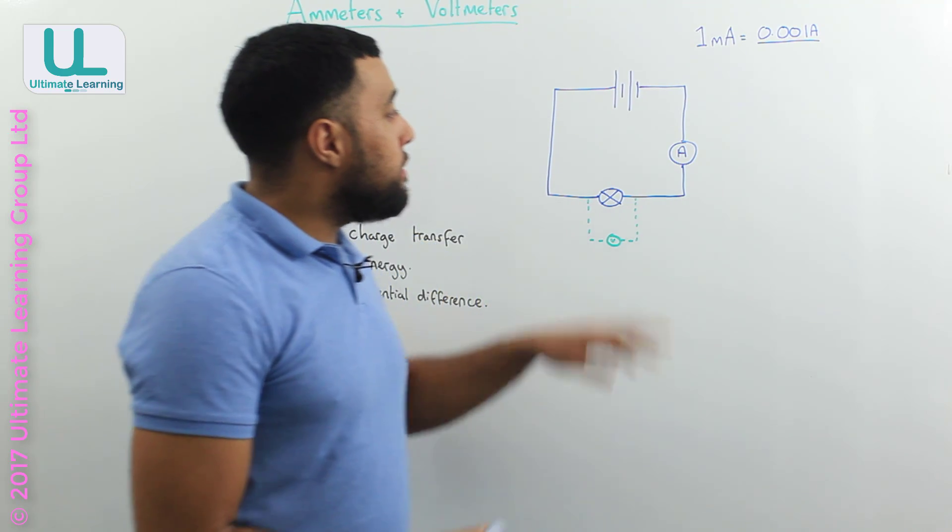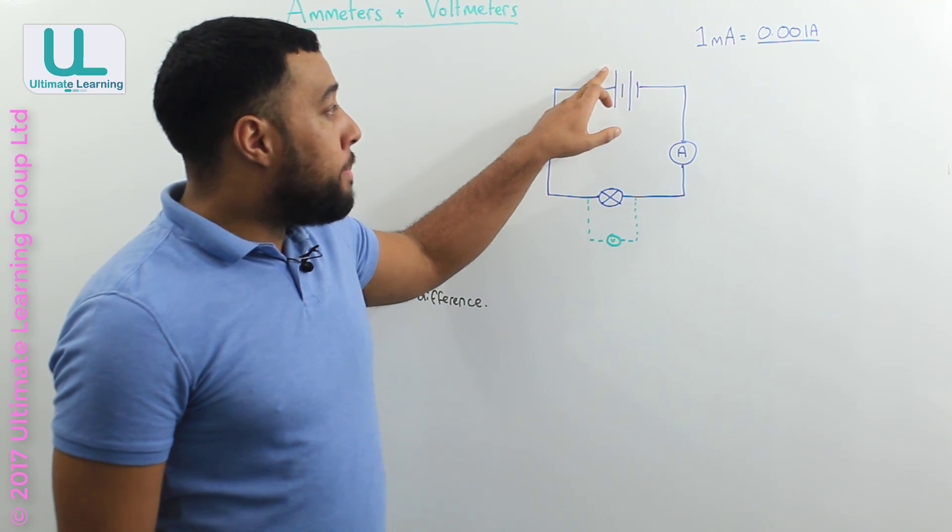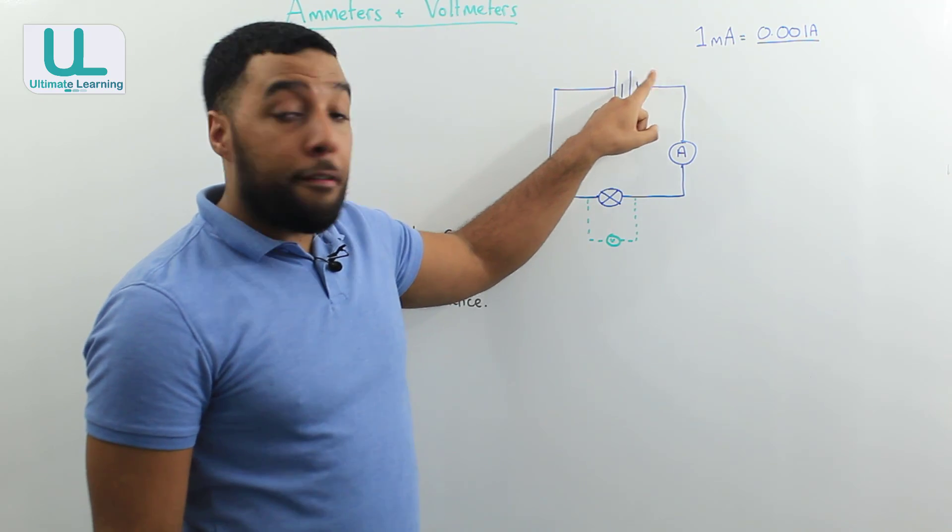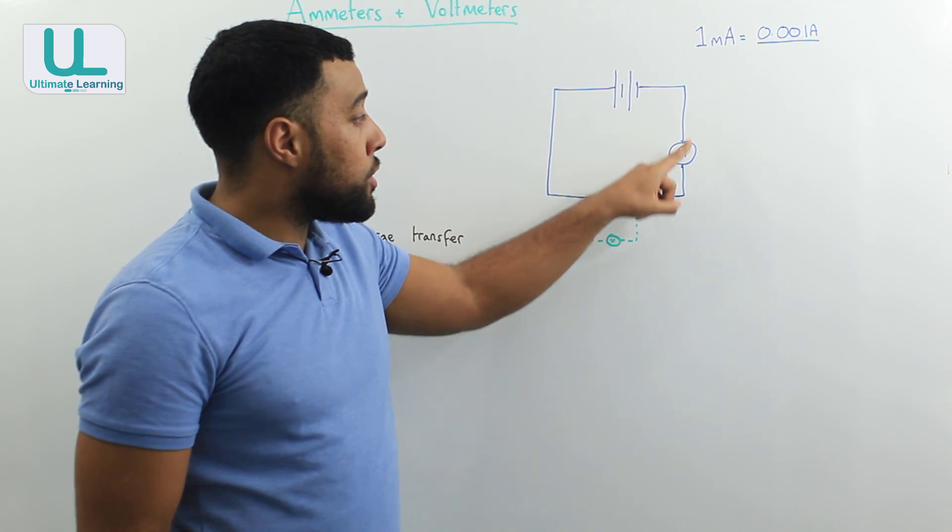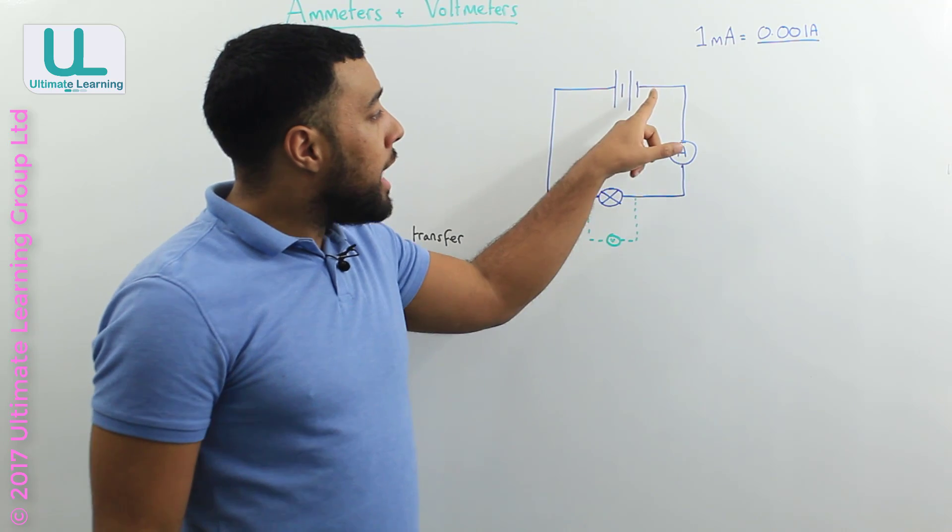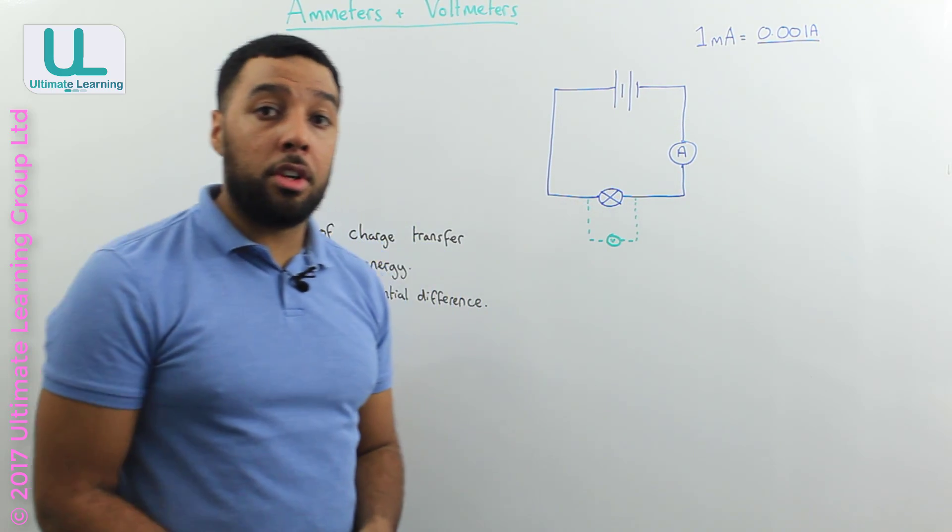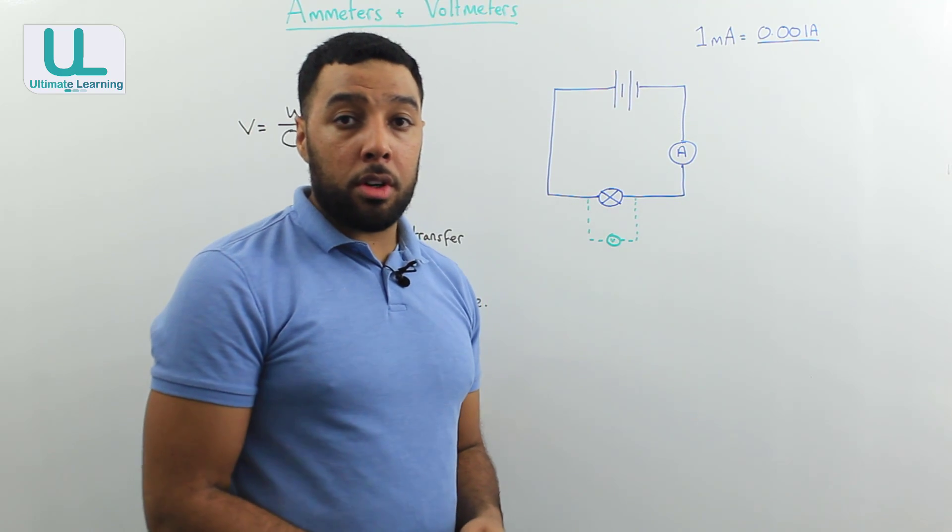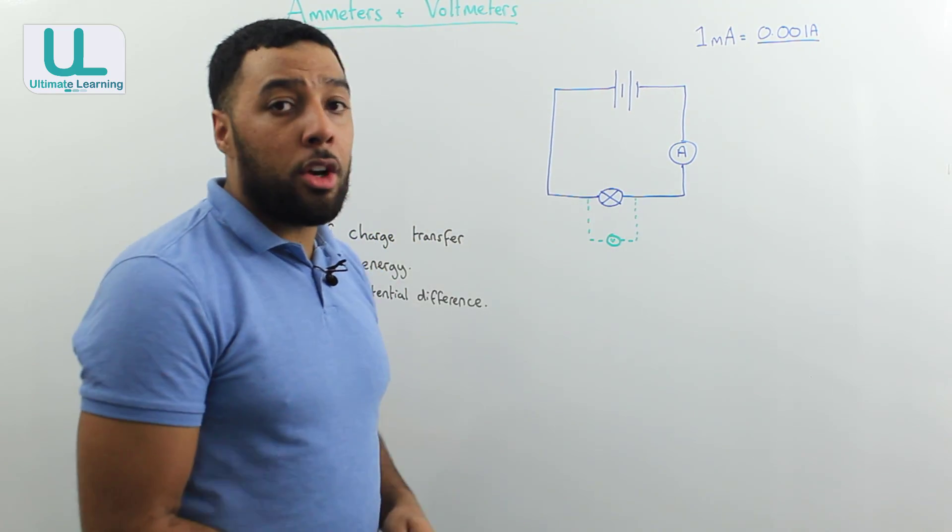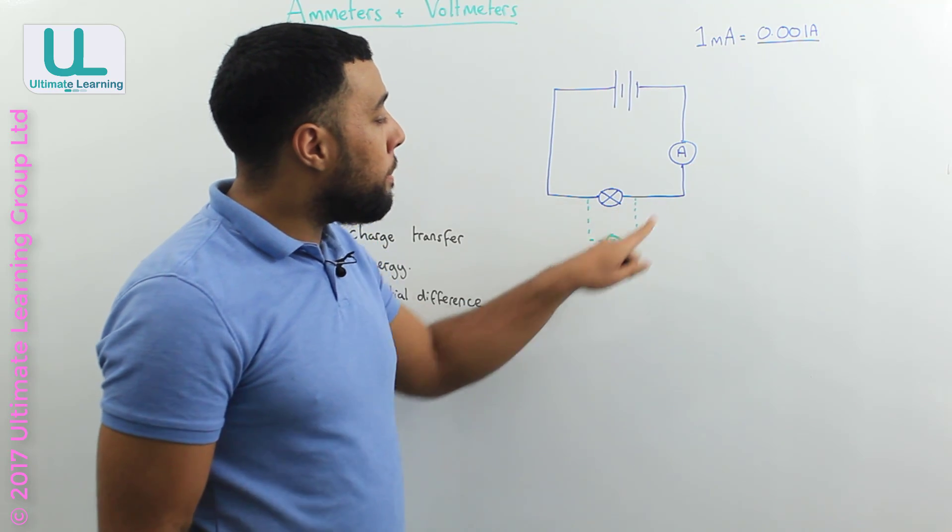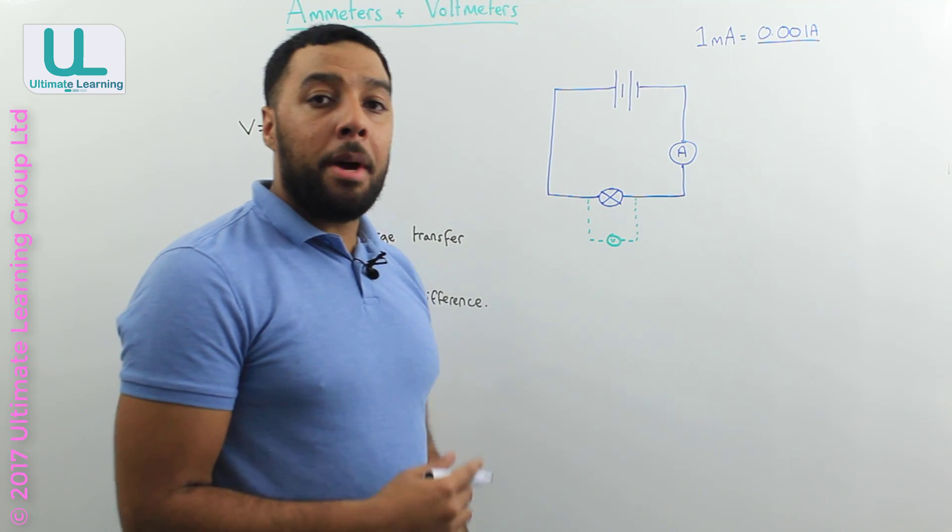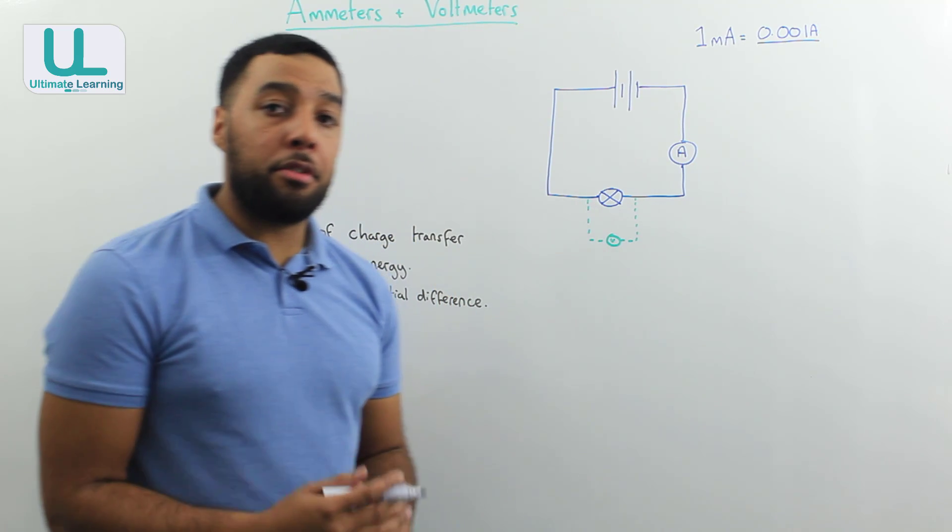We've seen in previous videos where the battery provides a push for electrons around a circuit, and as those electrons pass through a component, energy is transferred to make that component work. But as you can see on this diagram here, we have two components attached to this circuit in different ways.